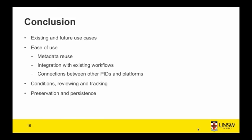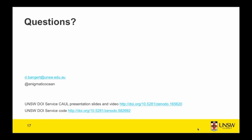In conclusion, the UNSW DOI service was designed to meet existing and future use cases — it's flexible and scalable. A priority was ease of use, so we reuse metadata from the repository where possible. It integrates with existing workflows, for instance with the research output system and the repository itself, and it connects with other PIDs and platforms like ORCID. Conditions are set to ensure the identifier is governed correctly, that resources remain persistent, and that the link can continue to be resolved as a citable, enduring part of the scholarly record — handled by preservation policies, the reviewing process, and the ability to track DOI requests.